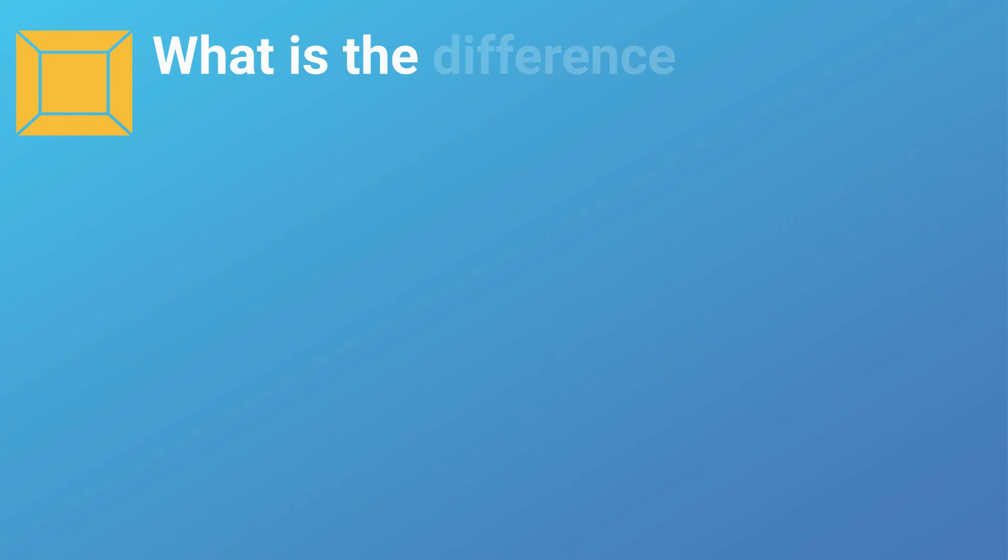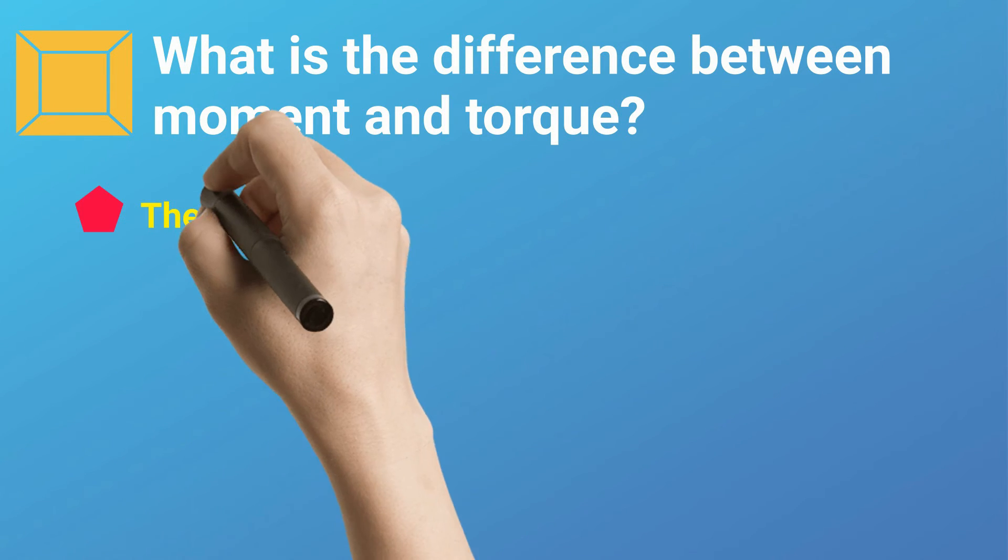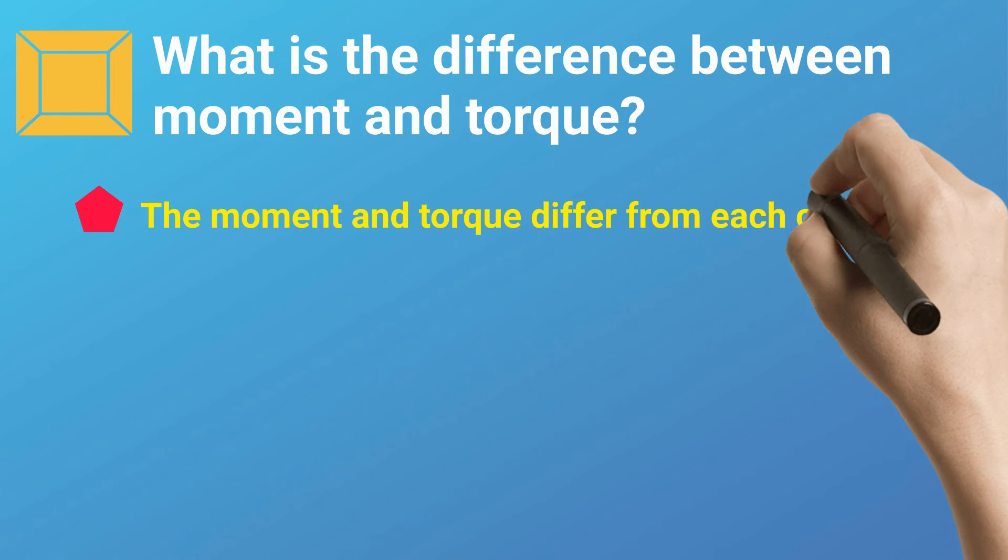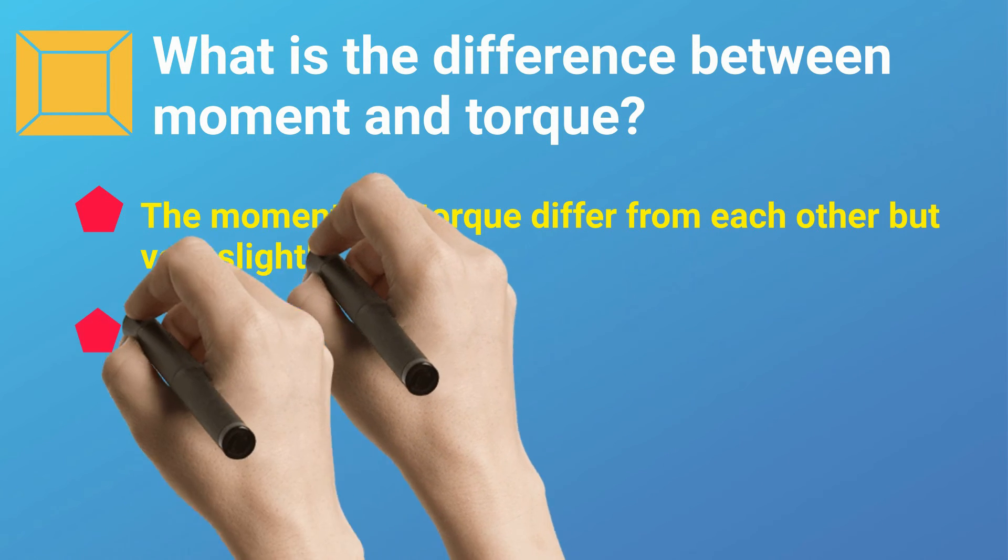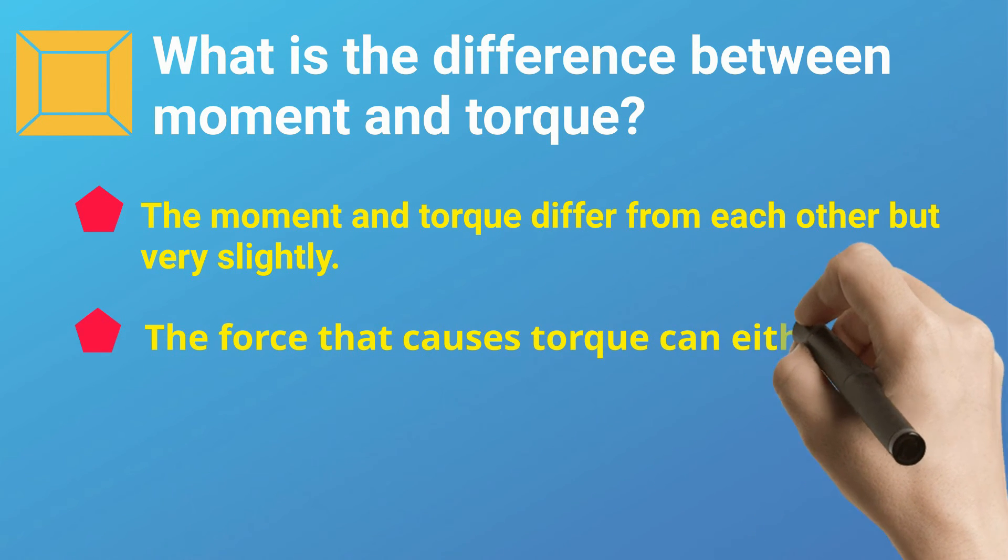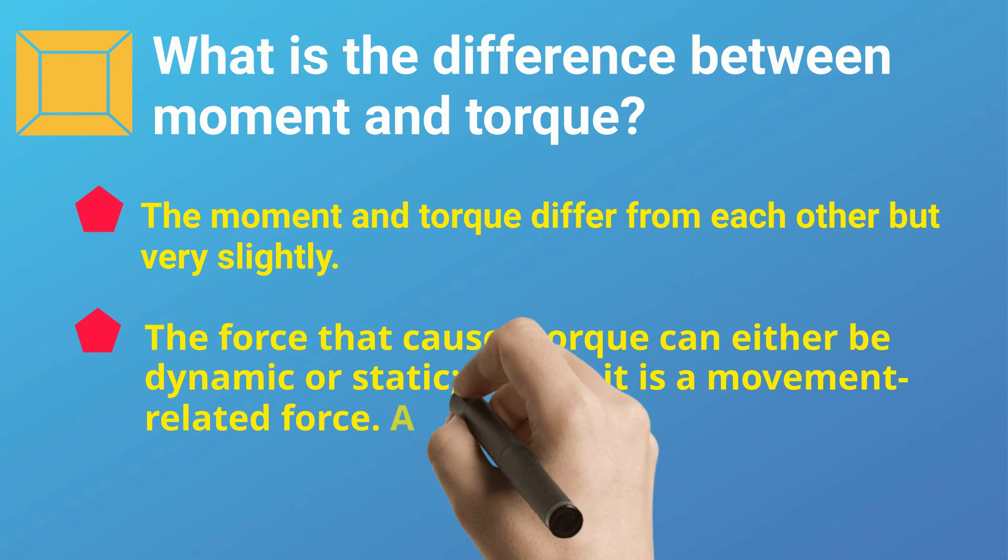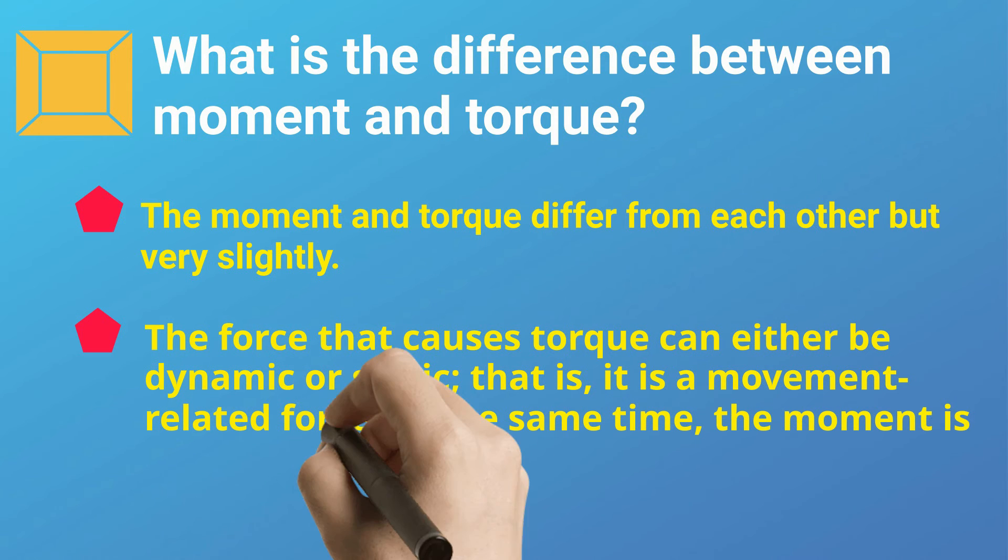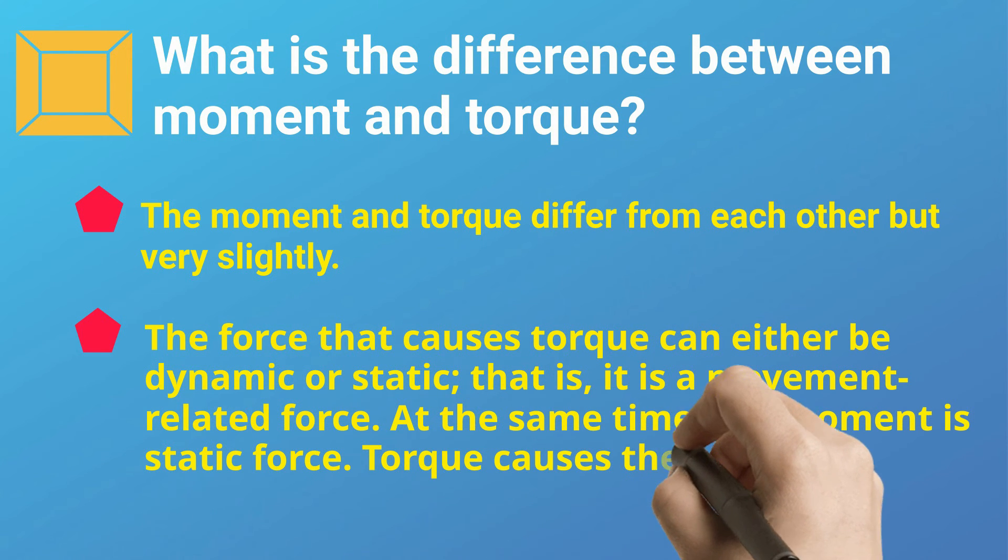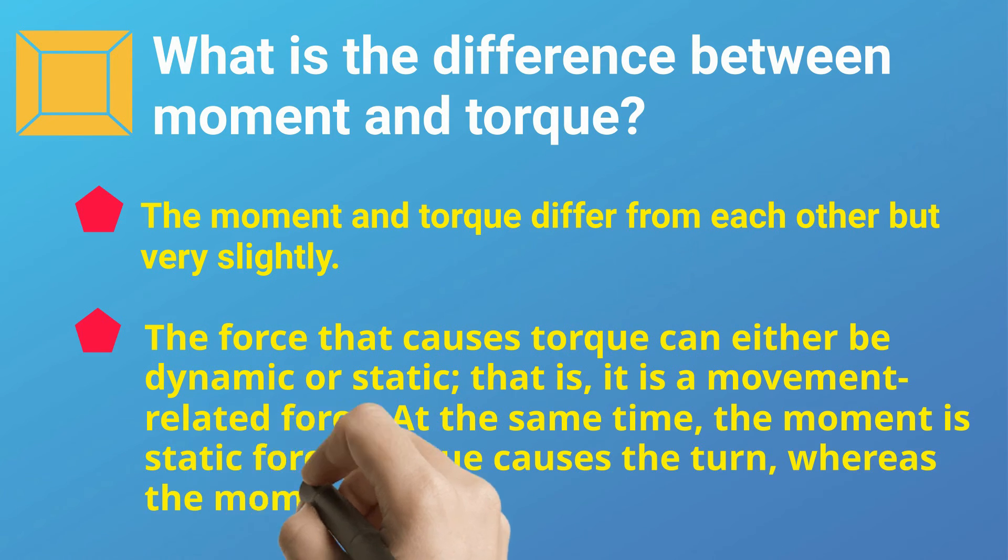What is the difference between moment and torque? The moment and torque differ from each other, but very slightly. The force that causes torque can either be dynamic or static, that is, it is a movement related force. At the same time, the moment is static force. Torque causes the turn, whereas the moment is the ability to make a turn.